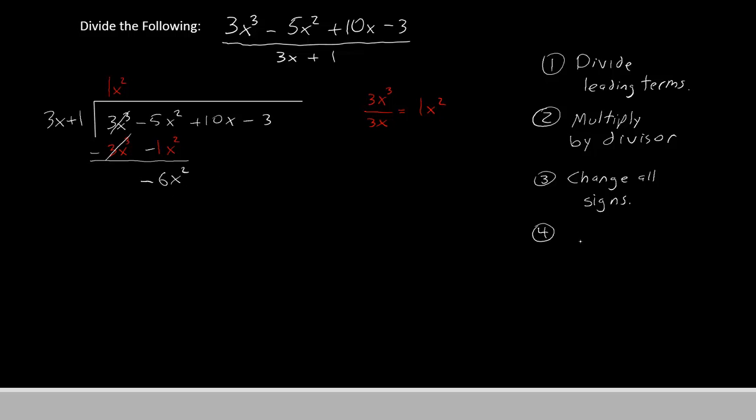Our fourth step now is to bring down the next term. And we're going to repeat this process from step 1 down to step 4 until we run out of terms to bring down. We've brought down the 10x, and now we go back up here to step 1, and we divide the new leading terms. Let's have a look at our new leading terms.